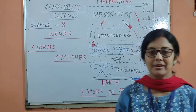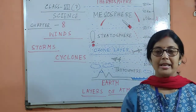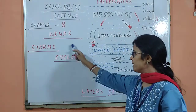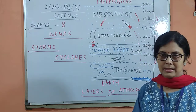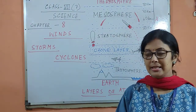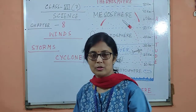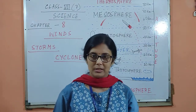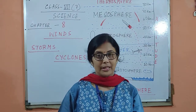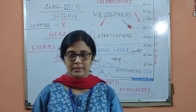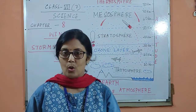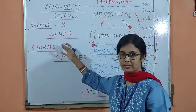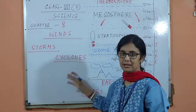Hello and welcome, class 7. Again we are going to start our new chapter. The chapter is about wind, storm and cyclone — Chapter 8. In this chapter we are going to learn about the layers of atmosphere, their significance, as well as what is wind, how it is formed, what are storms and cyclones.